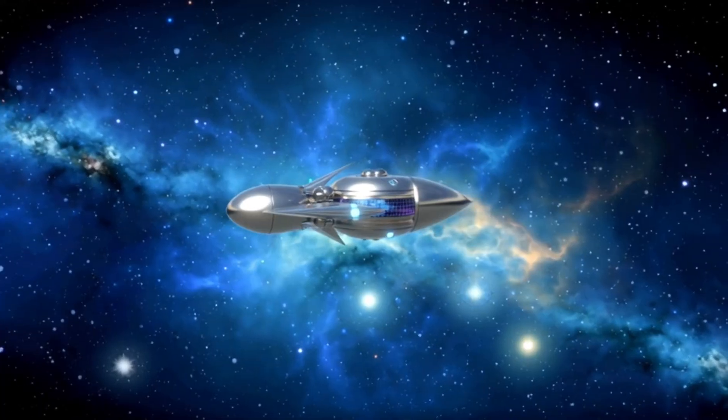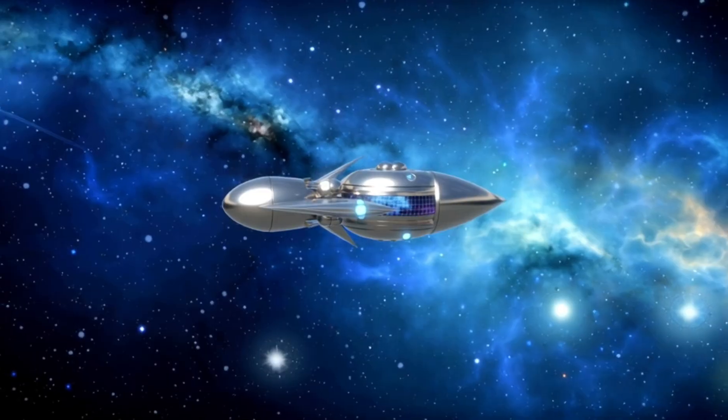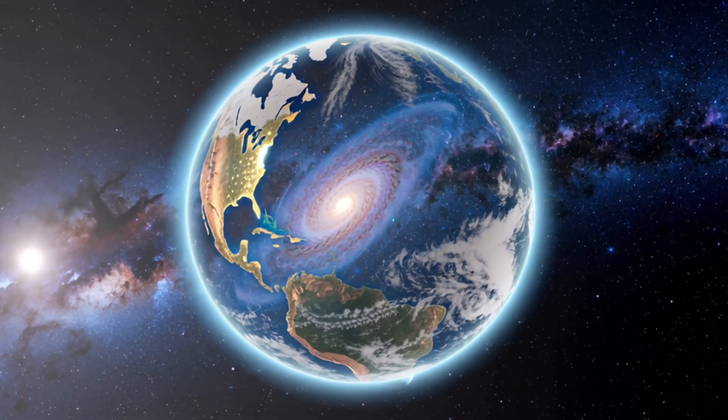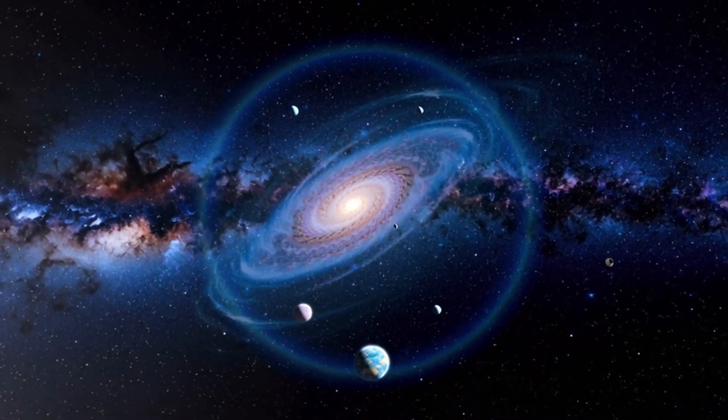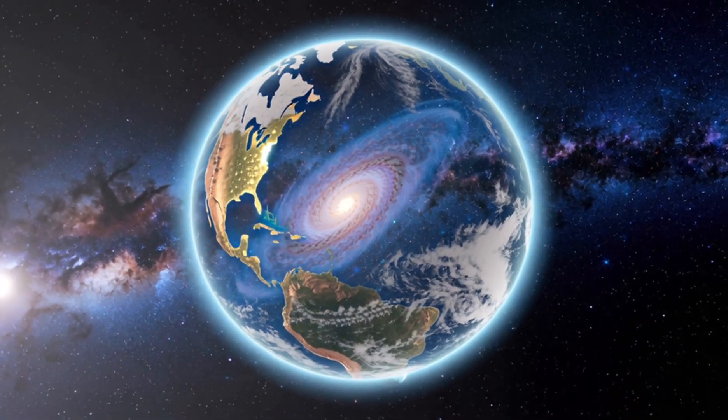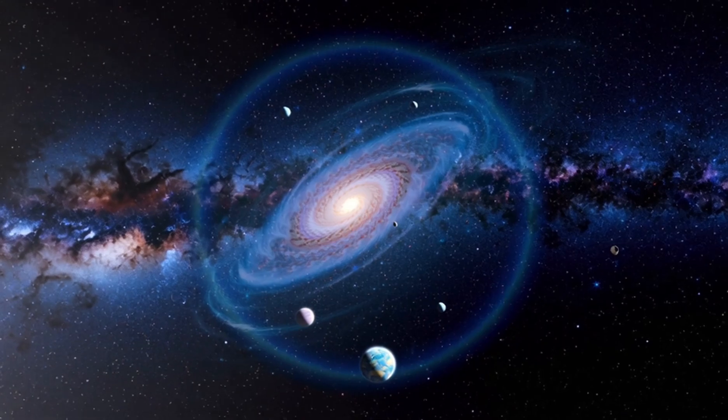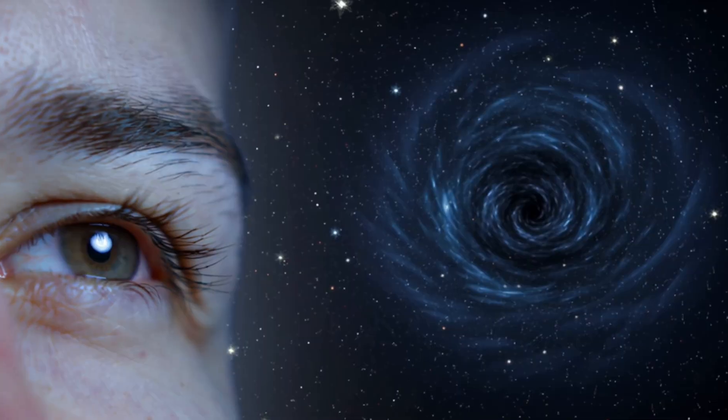With over 5,000 confirmed exoplanets, K2-18B is just one of many, but it's a symbol: proof that Earth-like conditions might exist far beyond our solar system.